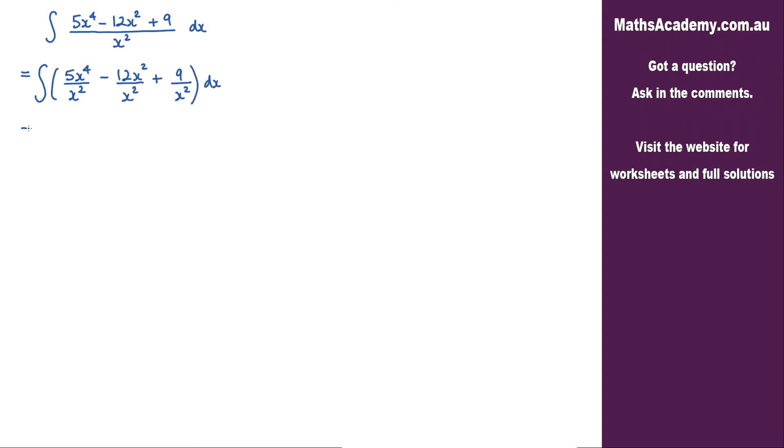We can do some cancelling here. We've got the x squared term here and the x to the power of 4, so they will cancel, leaving me with x squared. We've got the x squared here cancelling with this x squared here. And the 9 over x squared, I can write that as 9x to the negative 2. So let me go ahead and do that.